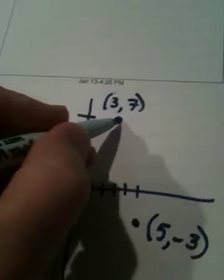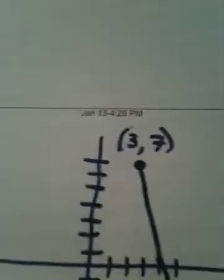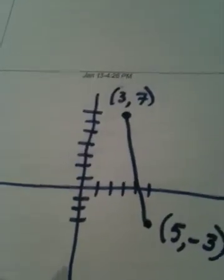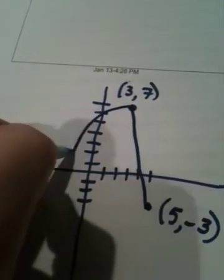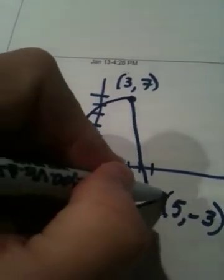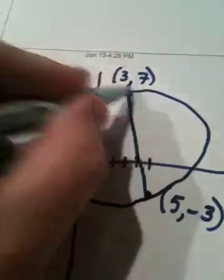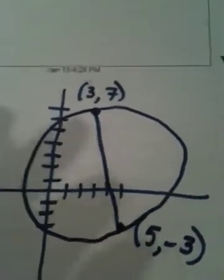Now these two points are told to be endpoints of a diameter of a circle. Now don't laugh at my circle, but you get an idea. There's obviously a circle going through these two points. See? It's kind of a sad circle, but you get the rough idea. It's a circle.